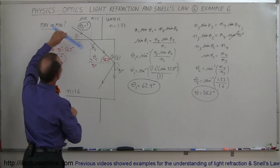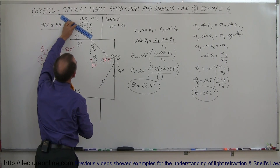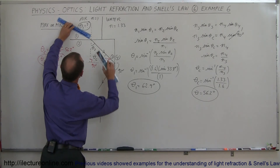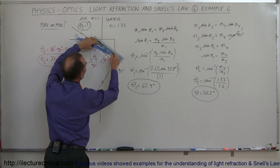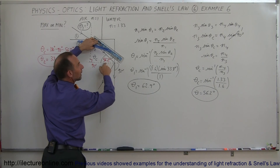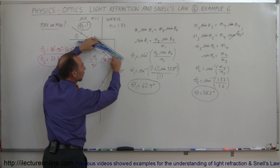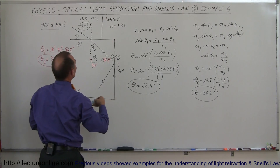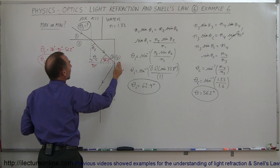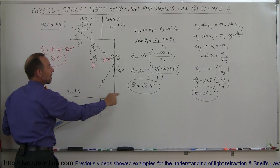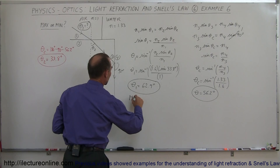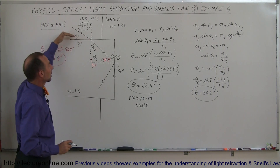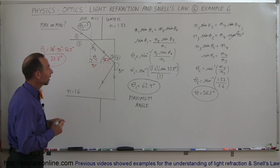Now, is 62.9° the maximum or minimum angle? If we make theta_1 larger, the refracted angle becomes larger, which means at the second boundary the angle is farther from the critical angle — the beam is more likely to cross the boundary rather than reflect. So a larger theta_1 means no total internal reflection. Therefore 62.9° is the maximum angle: any angle of 62.9° or smaller will produce total internal reflection, but larger angles will not.